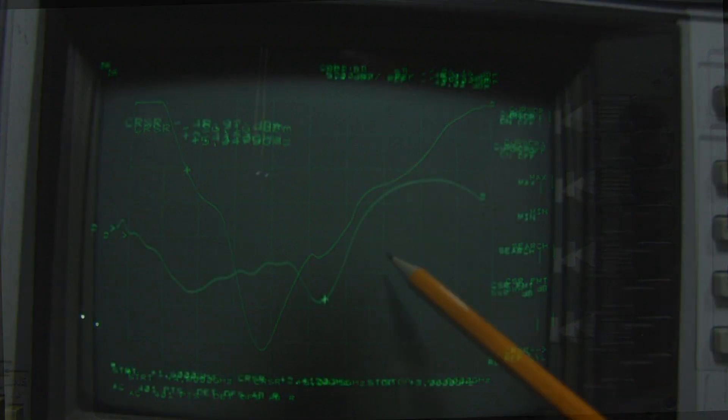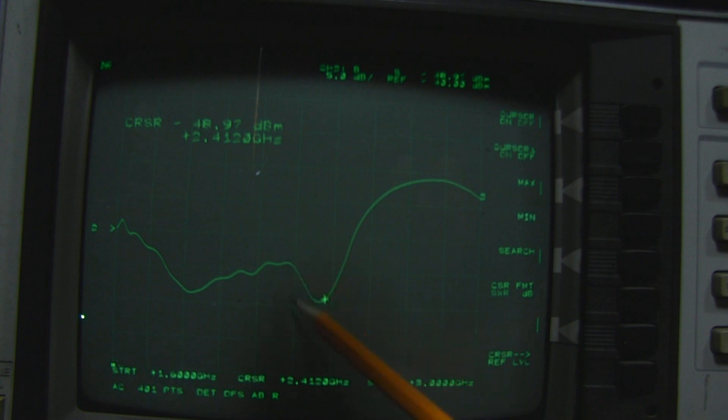Here we are at 2.4 gigahertz for Wi-Fi. I'm scanning from 1600 megahertz all the way up to 3 gigahertz. We've got this dip here right in the Wi-Fi spectrum. I'll move the cursor, you can see 2.45 there, 2.40 there.